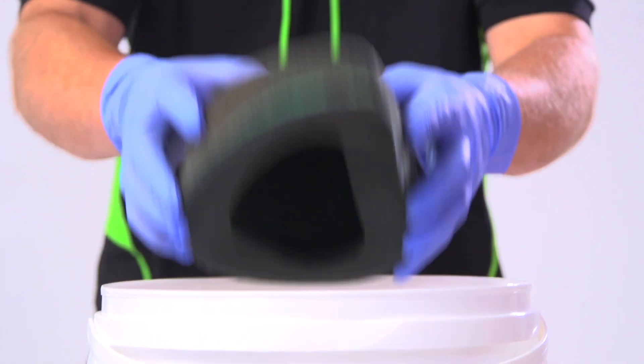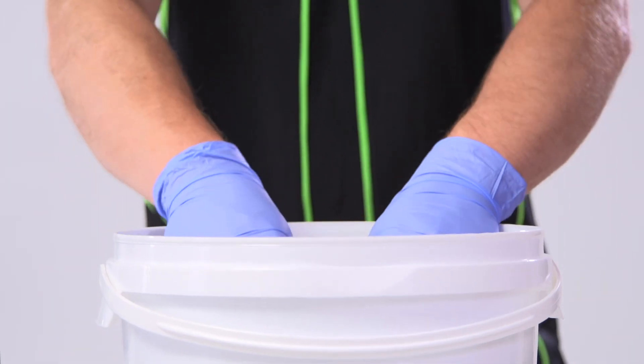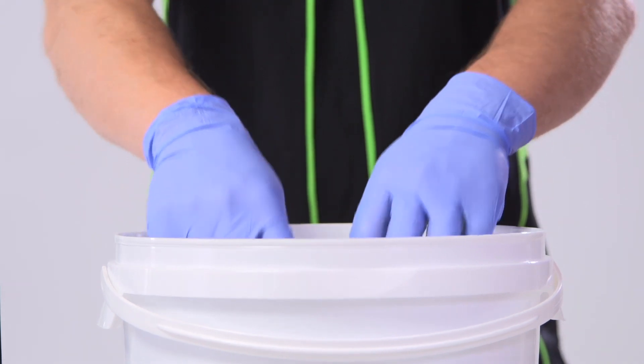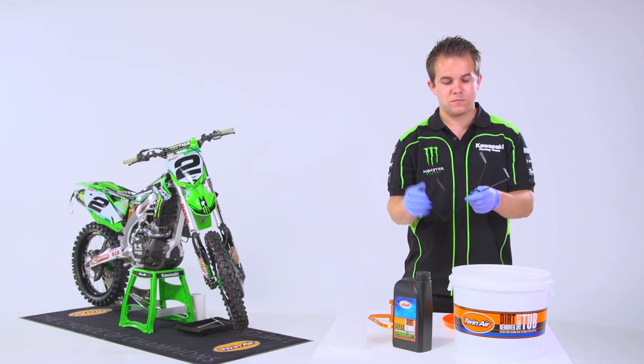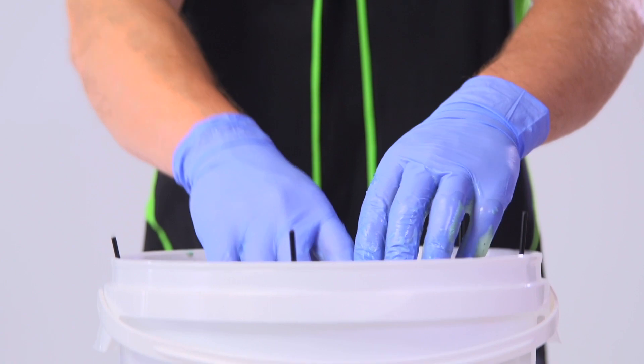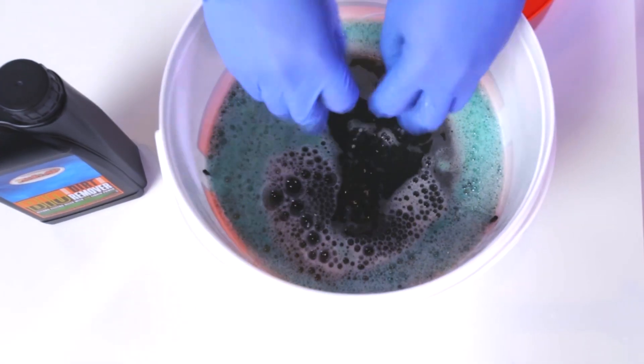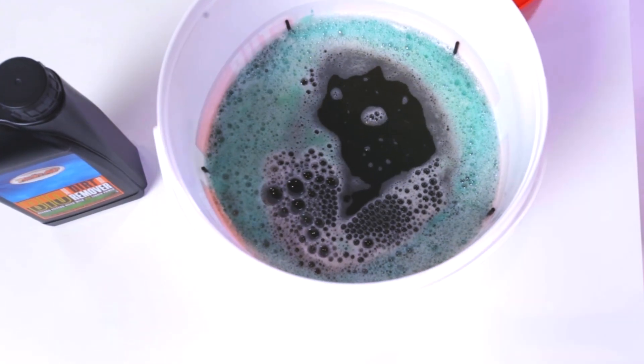Fully submerge the dirty filter into the water. Be careful not to burn your hands in the hot water. Insert the black wire rack into the cleaning bucket with the pins facing up. This will hold the dirty filter in the cleaning solution.